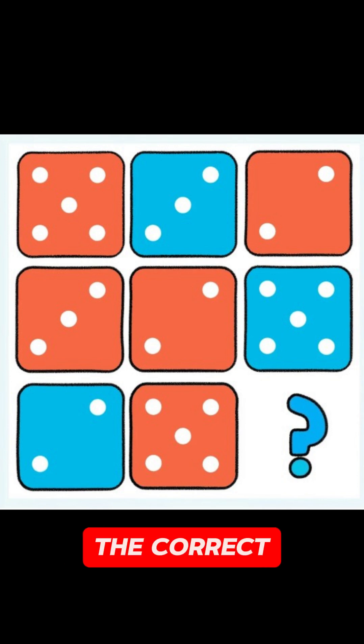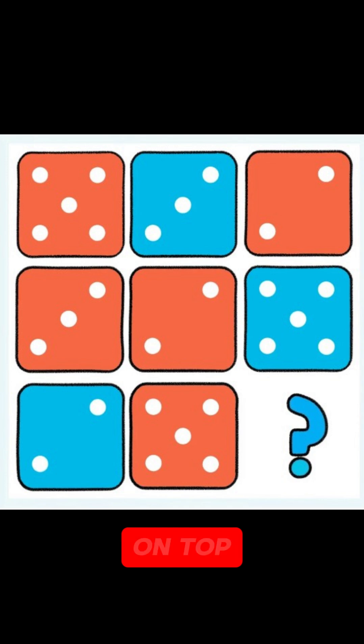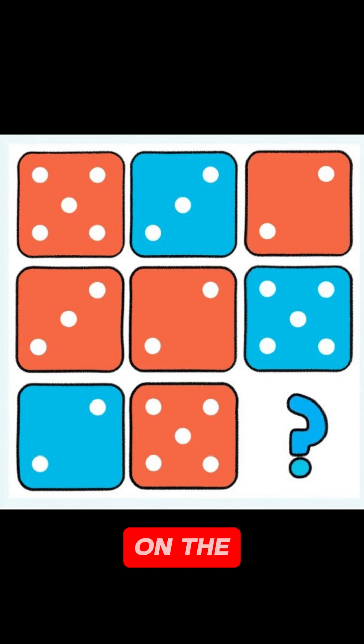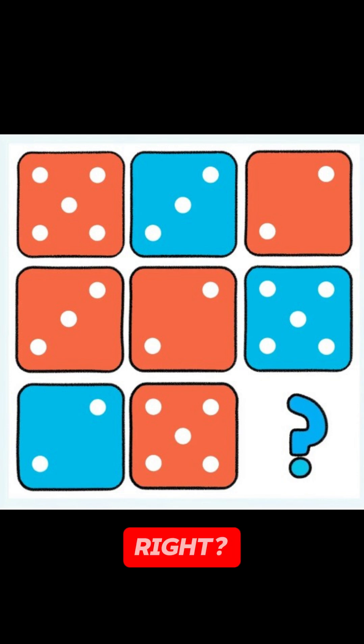Time's up. The correct die has a five on top, six on the front, and following the rotation, a four on the right side. Did you get it right? Let me know.